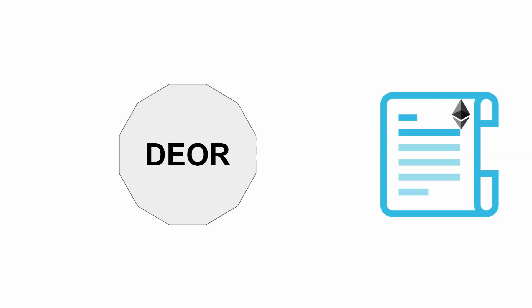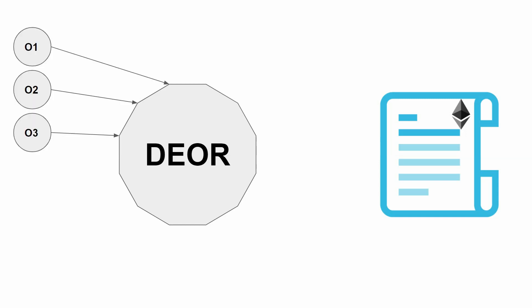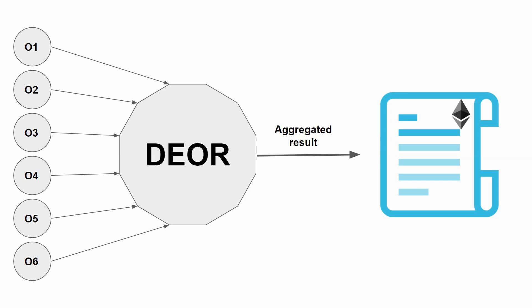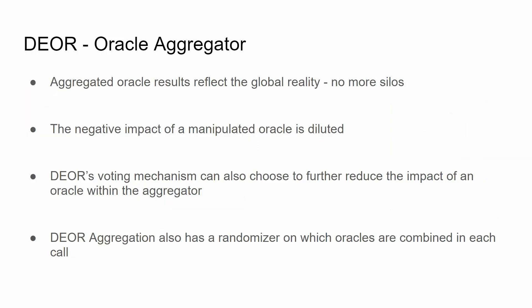Dior is a data aggregation oracle. When a smart contract requires information, it pools data from multiple independent oracles and provides an aggregated result. When data is aggregated from multiple independent sources, you no longer have the problem of silos — localized pools that can be manipulated — because even if one single pool is manipulated, other oracles from other pools still reflect true data. This is advantageous because the negative impact of a single manipulated oracle is diluted.